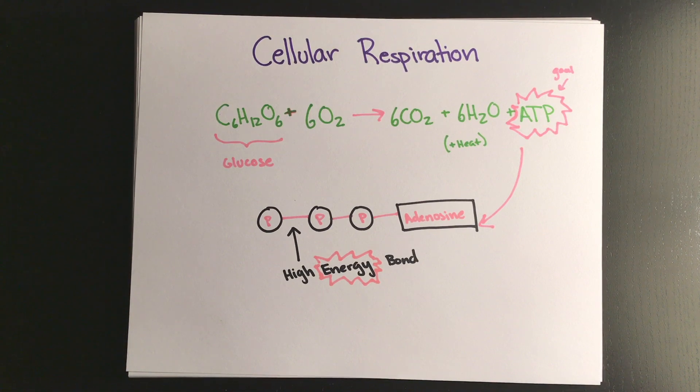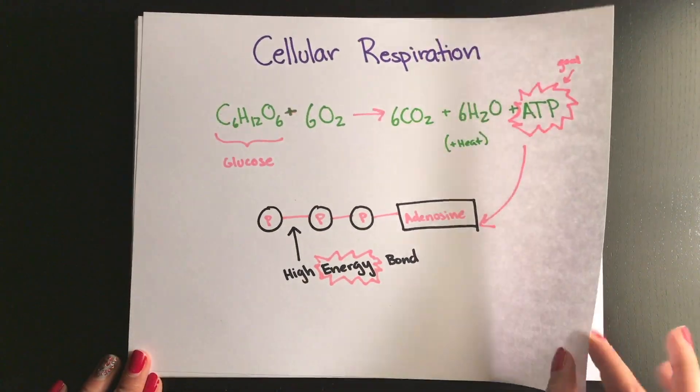Now before diving in it's also important to note that most of the energy made is stored in electron carriers such as NAD plus and FAD. So now let's get started. Cellular respiration is broken into three-ish or four steps depending on who you talk to or what book you're reading. The equation you must memorize to understand cellular respiration is C6H12O6 plus 6O2 yields 6CO2 plus 6H2O plus ATP and usually heat.